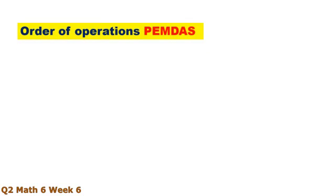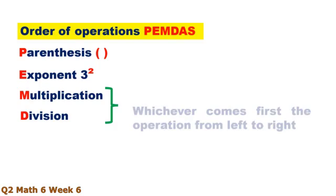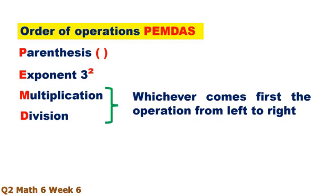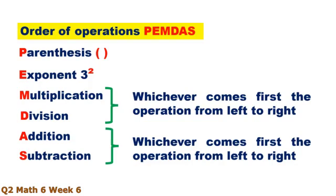The order of operation is also known as PEMDAS: P for Parentheses, E for Exponent, M for Multiplication, D for Division — multiplication and division, whichever comes first from left to right. A for Addition, S for Subtraction — addition and subtraction, whichever comes first from left to right.